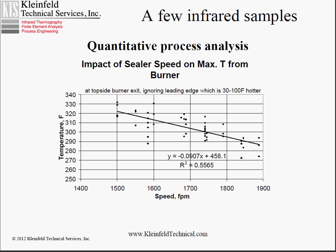Here are our results from that case. We have a plot here of temperature in the area of interest versus the speed of operation of that line. The correlation line is shown along with the data points. The R-squared for this is 0.56, which means about 55% of the variation in that temperature is explained by the speed of the line. It means 44% is explained by other things which are not identified in this case.